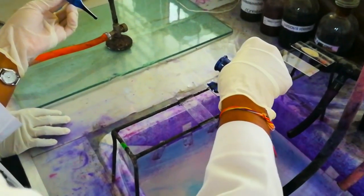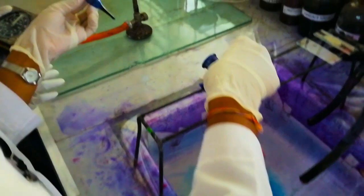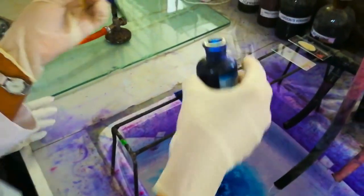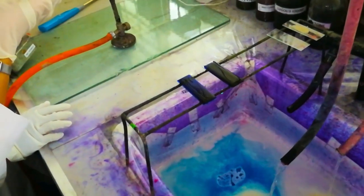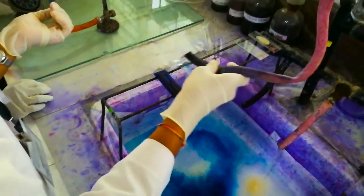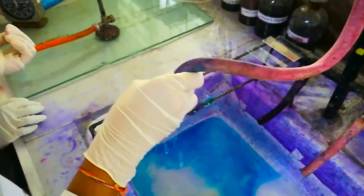Apply 0.1% methylene blue on the slide. Allow to stand for 30 seconds. Then gently rinse the slide with tap water and tilt the slide to drain off the water.